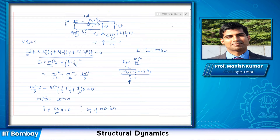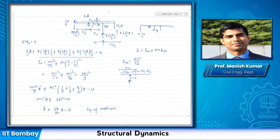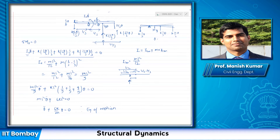To find the equilibrium position: the bar has point of rotation at one end, mg acting at l/2, and spring forces k·(l/3)·θ and k·(2l/3)·θ at their respective attachment points. Taking moments about the pivot gives the value of θ at static equilibrium, which determines the initial angle of the bar.